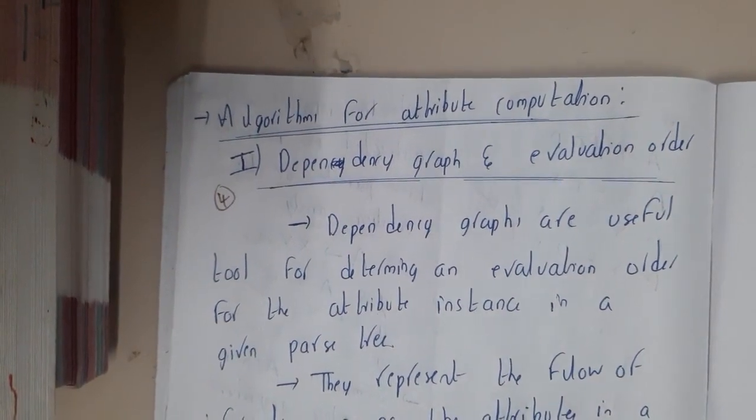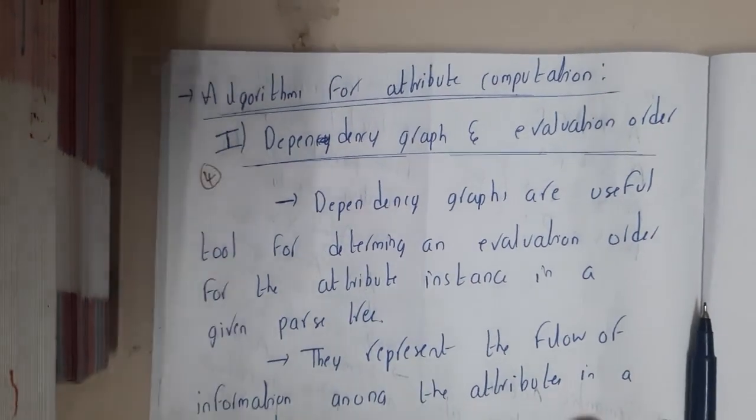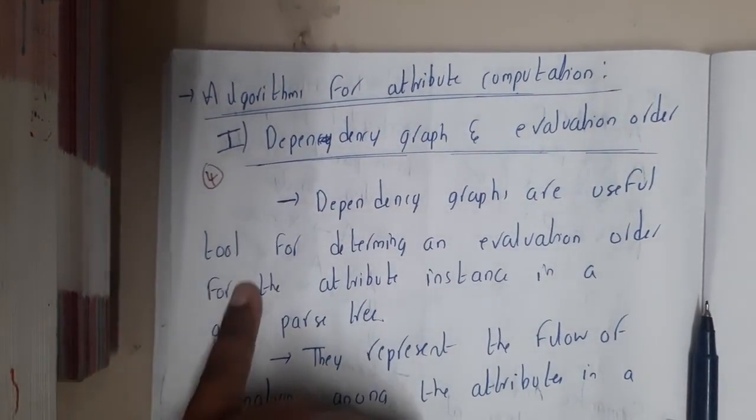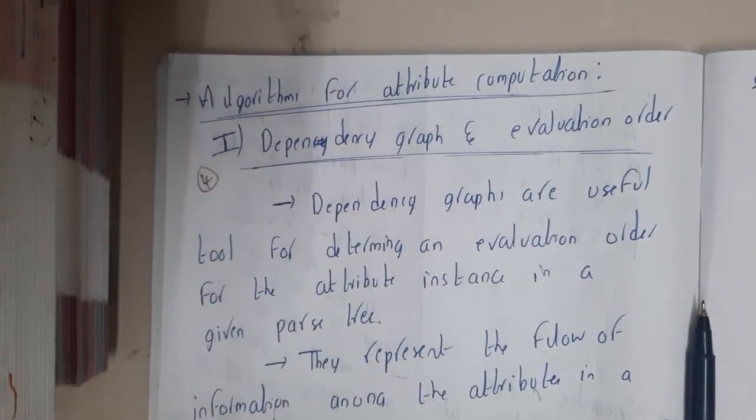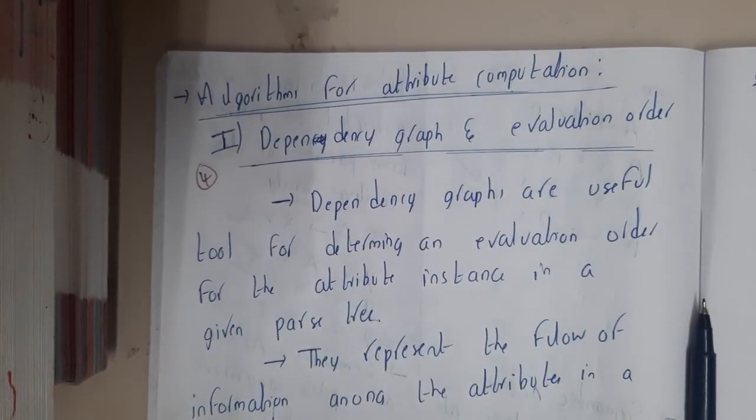lecture, we will be going through an algorithm for attribute computation. The evaluation which we will be using is the dependency graph and its evaluation order. So let us meet in the next lecture and discuss about it. Thank you, thanks for watching.